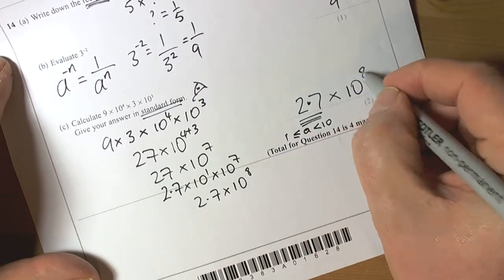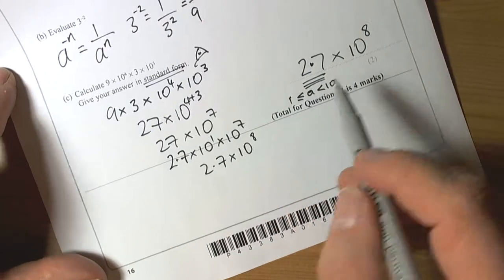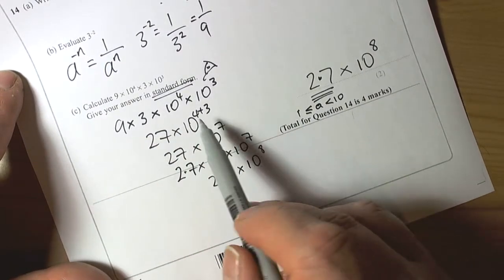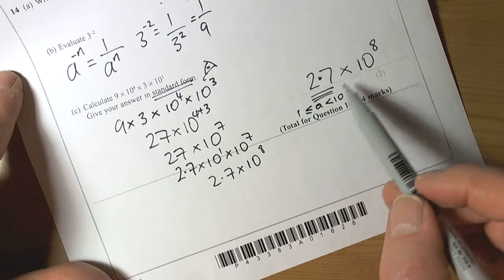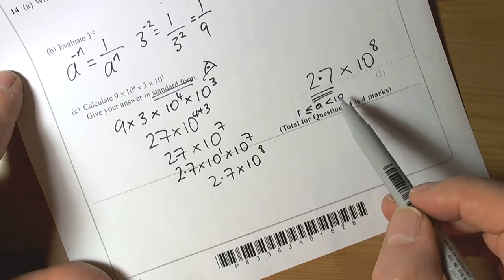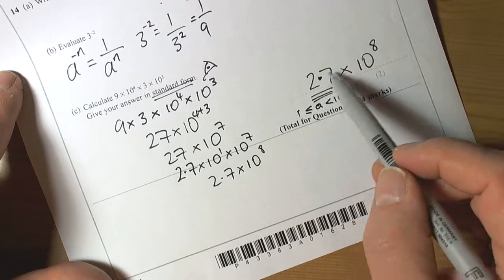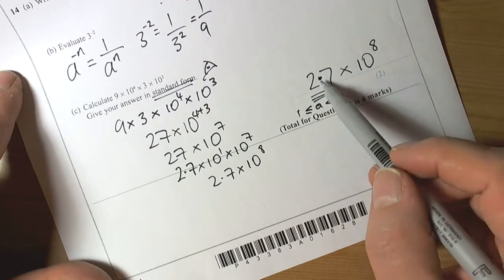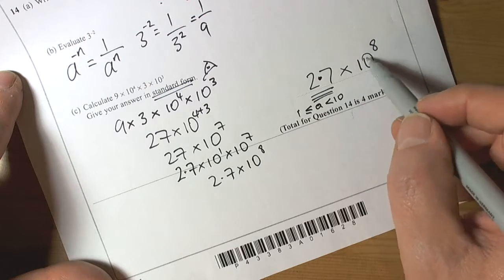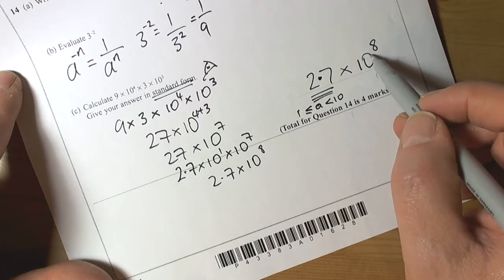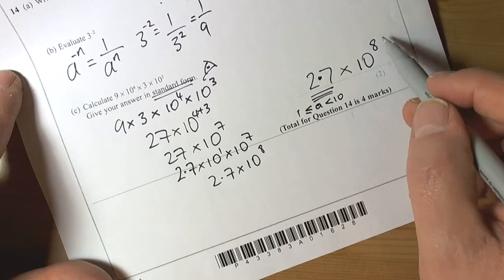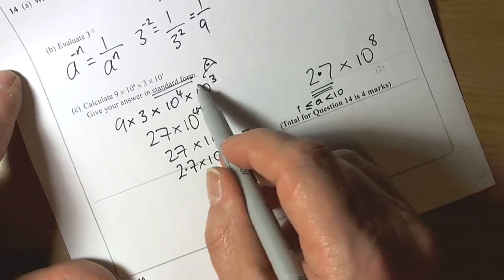The final answer here will be 2.7 times ten to the power of eight. Just to remember some basic ideas about standard form: the front of the standard form number must be between one and less than ten, so 1.something, 2.something, and so forth up to 9.something. The power of it is always an integer, so it's going to be either a positive integer or a negative integer, and we get the answer here by multiplying through.